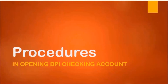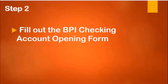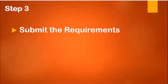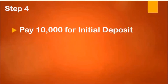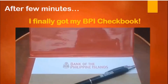Here are the procedures for opening a BPI checking account. Step 1: Go to the nearest BPI branch, preferably your branch of account. Step 2: Fill out the BPI checking account opening form. Step 3: Submit the requirements. Step 4: Pay 10,000 pesos for the initial deposit. Step 5: Pay 175 pesos for the checkbook. After a few minutes, you will finally receive your BPI checkbook.